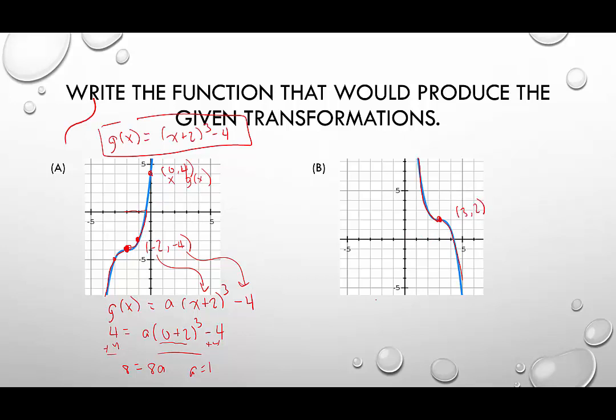So initially when we write the equation for this function, we would say g of x equals the unknown a times x minus 3 cubed plus 2. Inside opposite, outside same. Now let's find another point on the graph. We'll use this one here. This is the point 2, 3.